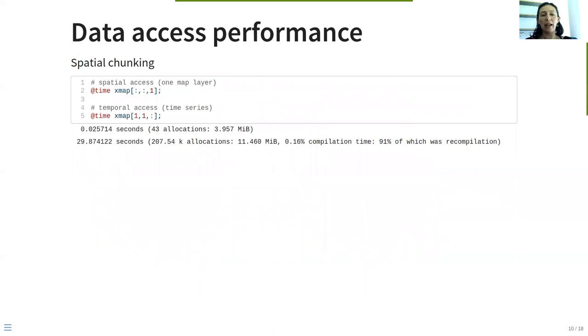One of the most important concepts when working with data chunking is data access performance. Here we are going to compare the access for both files, for the spatial chunking and the box chunking, to the time dimension and the spatial dimensions. We start with the spatial chunking. Here we observe that accessing one map layer, the spatial dimension, takes just only milliseconds, while if we want to access time series of one pixel, it takes around 30 seconds.